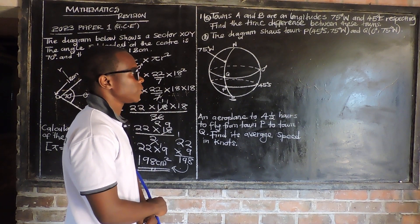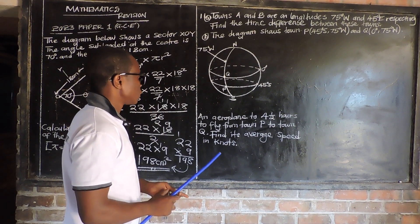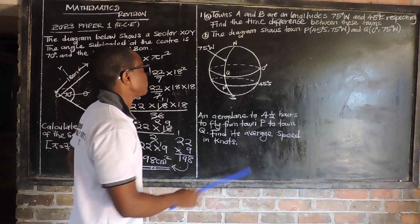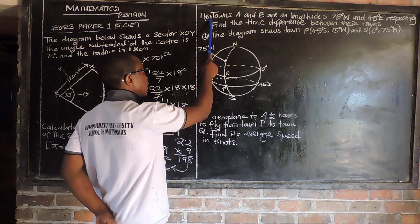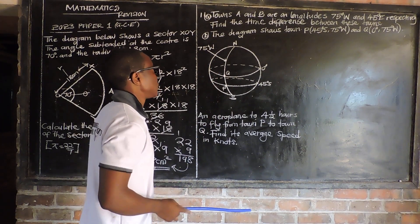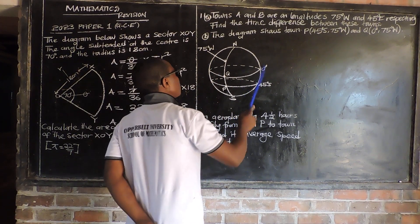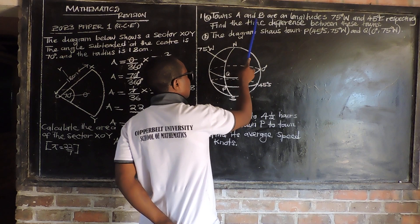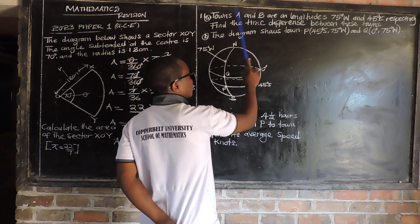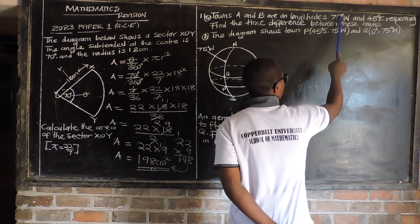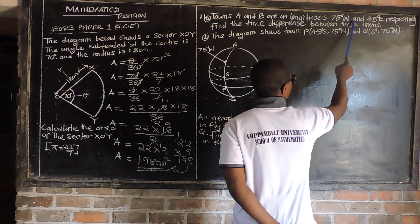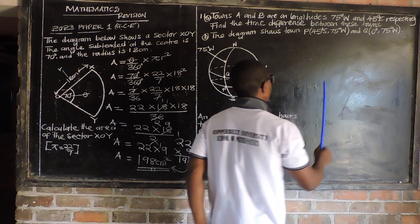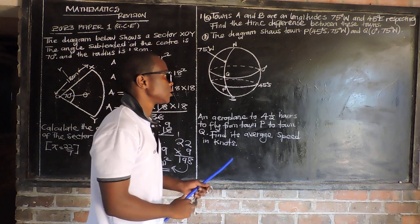The question is on Earth geometry. Question number 11 has two parts, part A and part B. So part A is saying: towns A and B are on longitudes 75 degrees west and 45 degrees east respectively. Okay, so we have two towns.